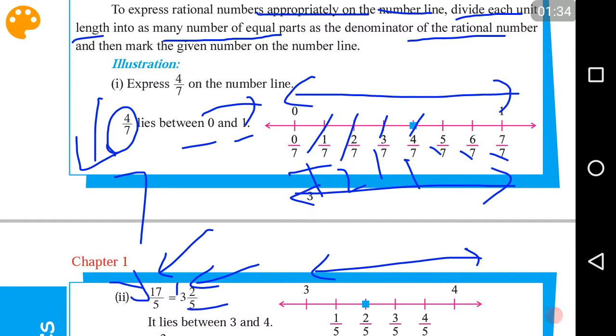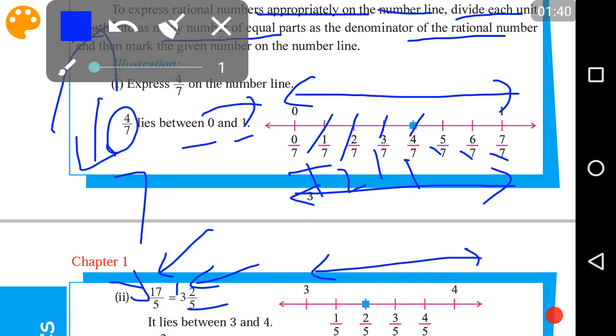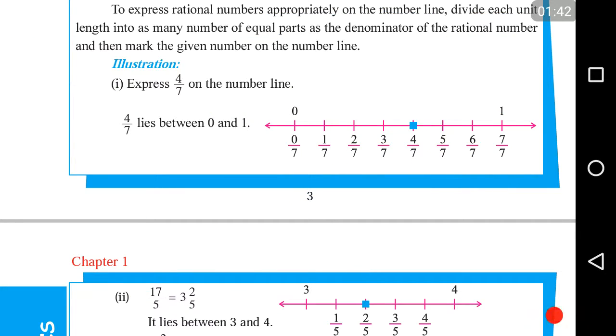into 5 equal parts because the denominator is 5. So, we have to again read this first definition. To express rational numbers appropriately on a number line, we have to divide each unit length into as many number of equal parts as the denominator of the rational number.